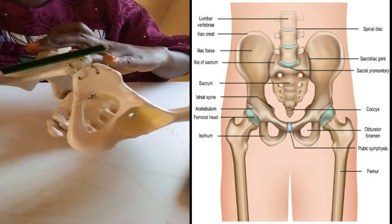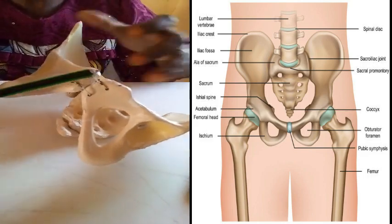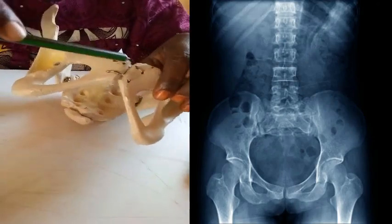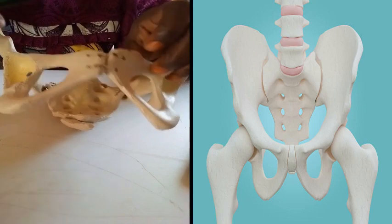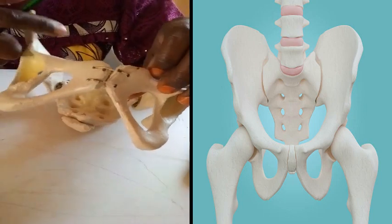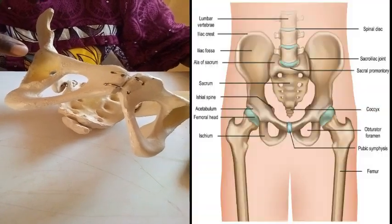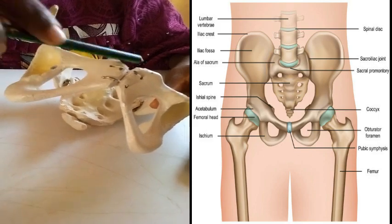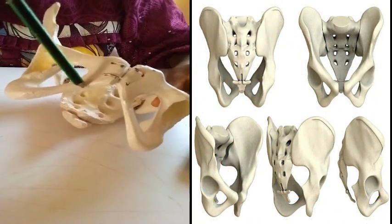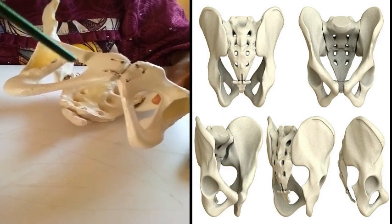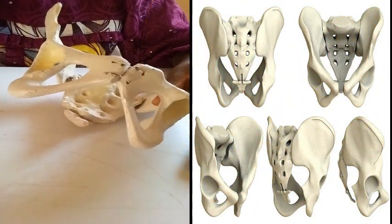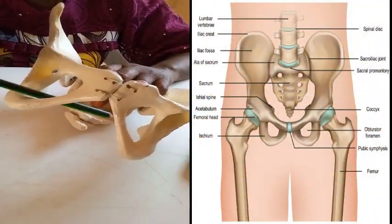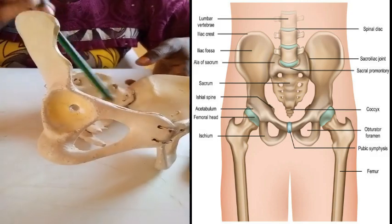The pubic bones are two in number, each forming an innominate bone, and they are joined together by the symphysis pubis joint. They are also made up of rami — the superior ramus and the inferior ramus — which join with the ischium to form the obturator foramen. The obturator foramen allows the passage of blood vessels and nerves to innervate the pelvic organs.